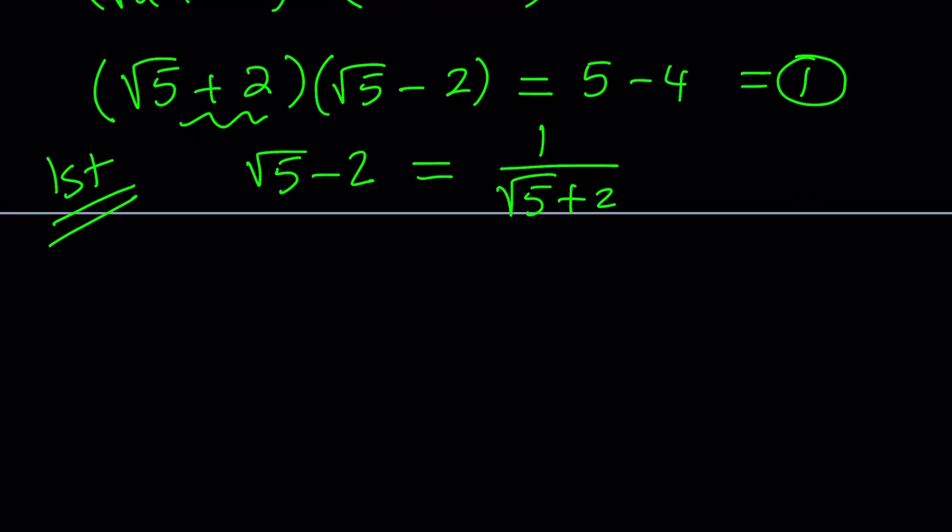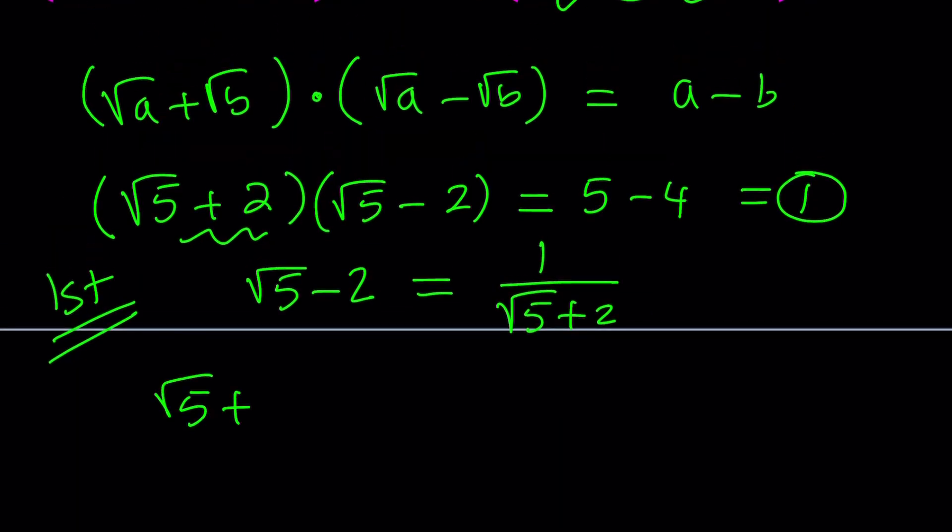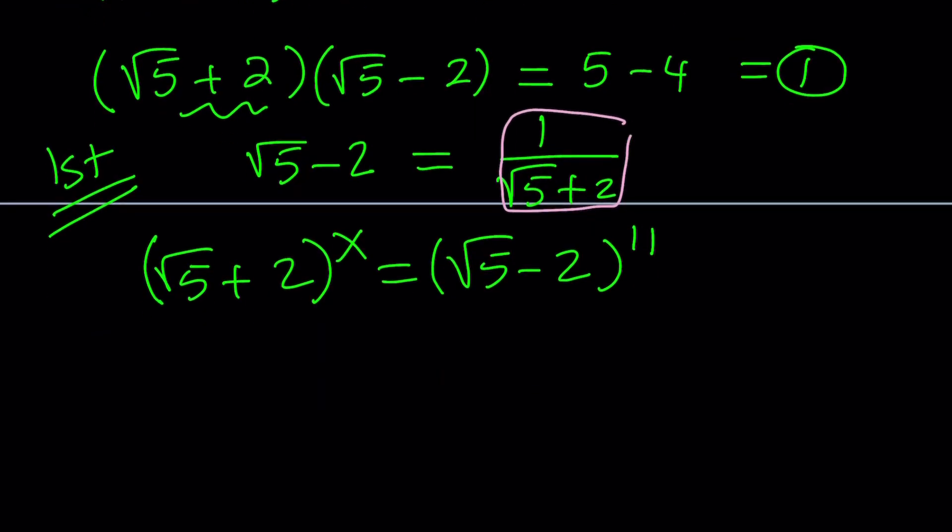Now, let's go ahead and rewrite the expression, the original equation. We have this equals that. And now, let's replace square root of 5 plus 2 with this reciprocal. So it's going to look like this. Square root of 5 plus 2 is going to stay the same to the power of x. I didn't want to change it because it has the variable, so leave it alone. And then on the right-hand side, this is going to be replaced with 1 over square root of 5 plus 2 and then raised to the power of 11.